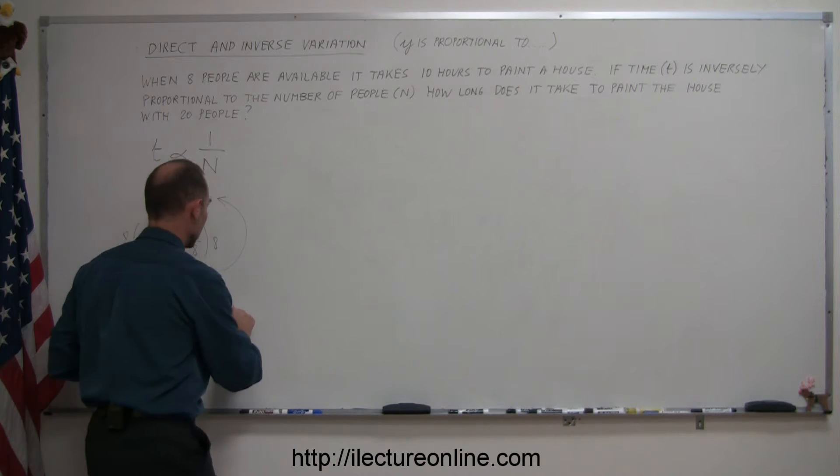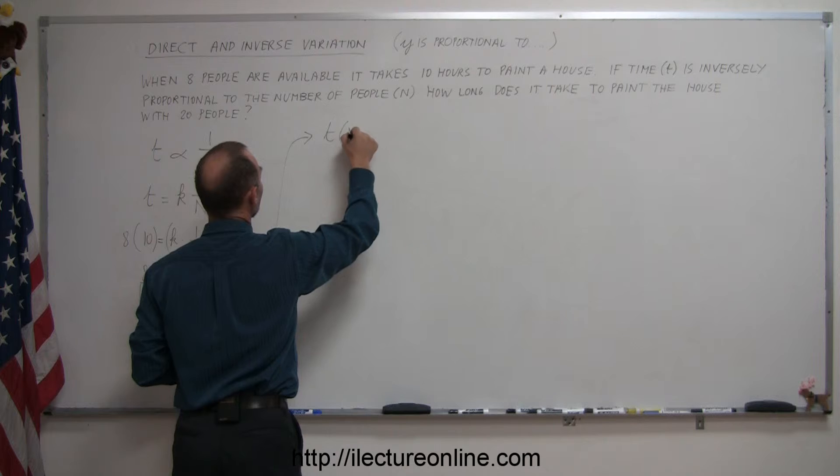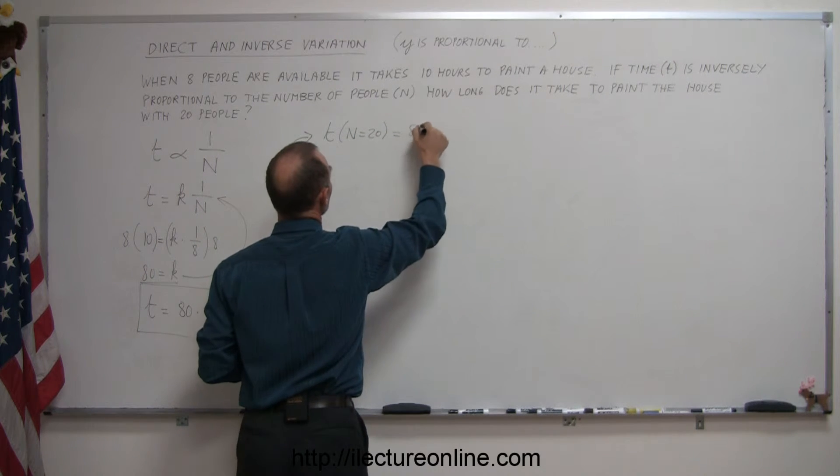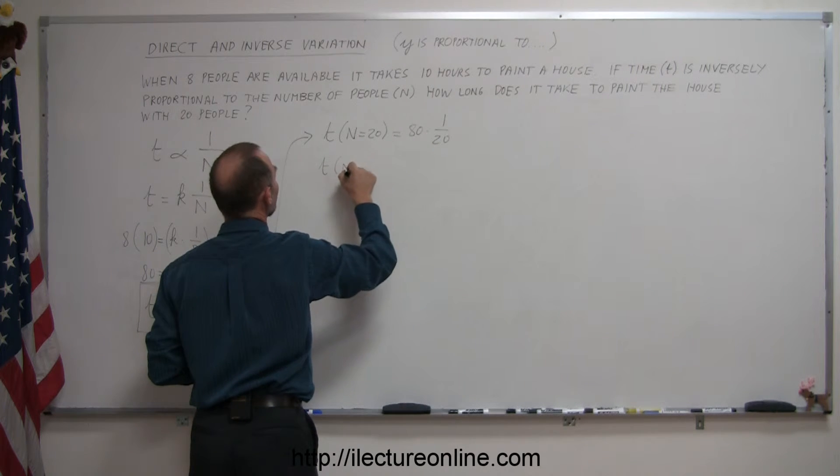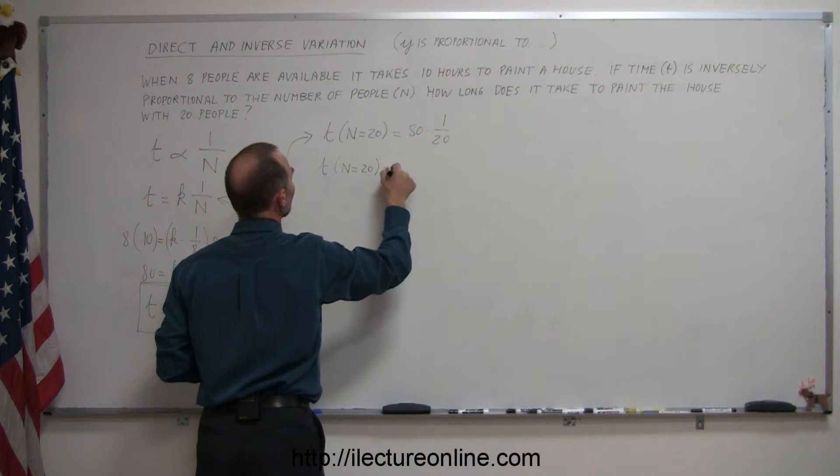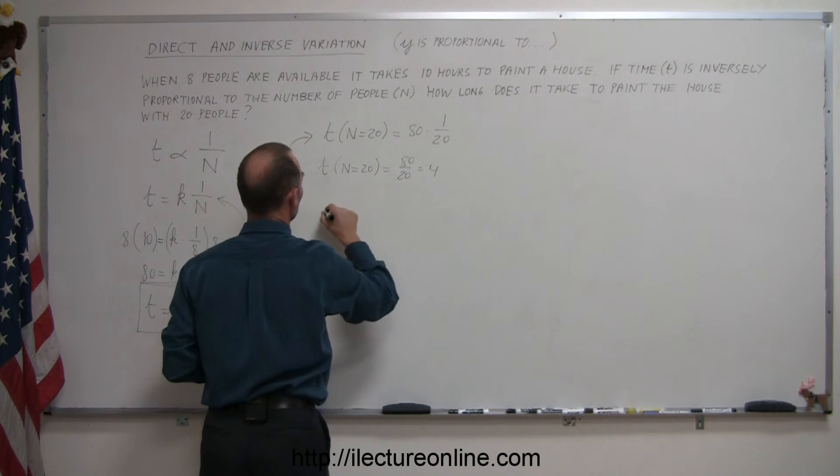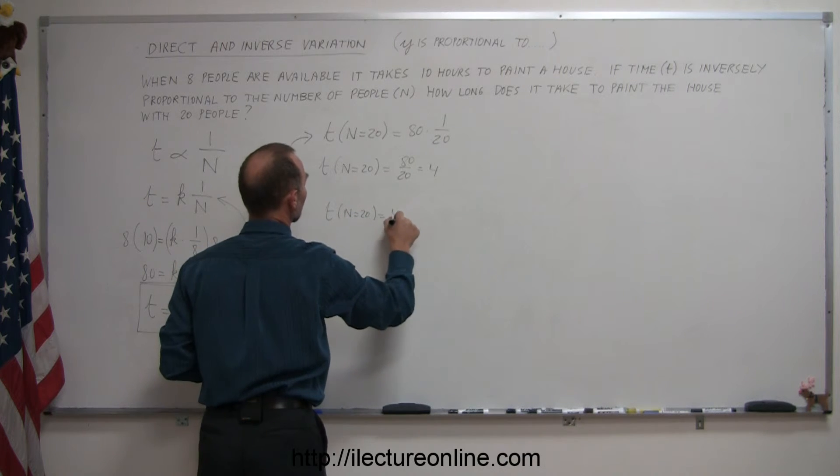So now we plug in the number, answer the question. So t when n is equal to 20 is equal to 80 times 1 over 20. And so t when n is equal to 20 is equal to 80 divided by 20 which is 4. So t when n equals 20 equals 4 hours.